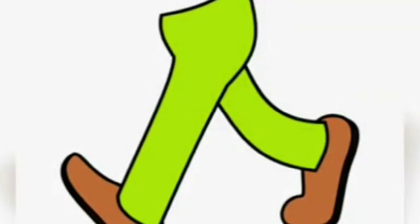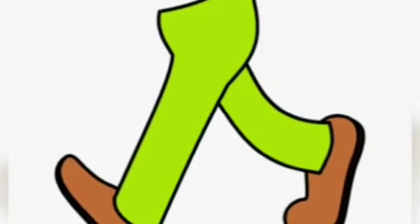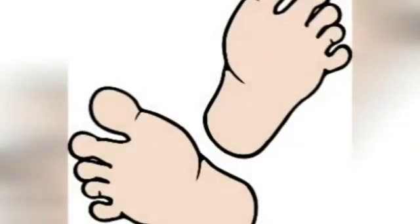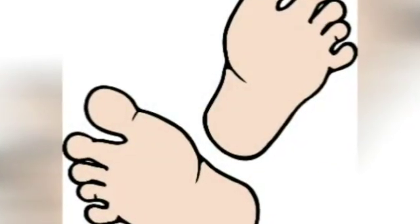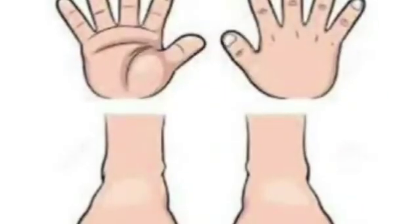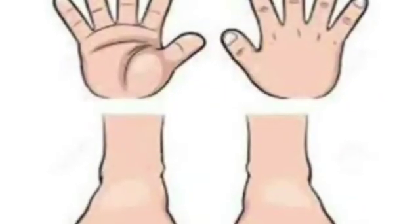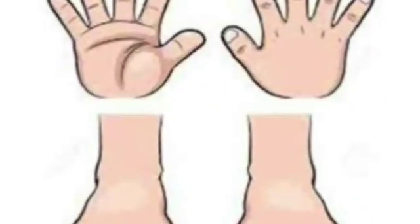Leg — we have two legs. We use our legs to walk and run. Next is knee, toe and foot. There are five toes in each foot, so there are ten toes in both feet.